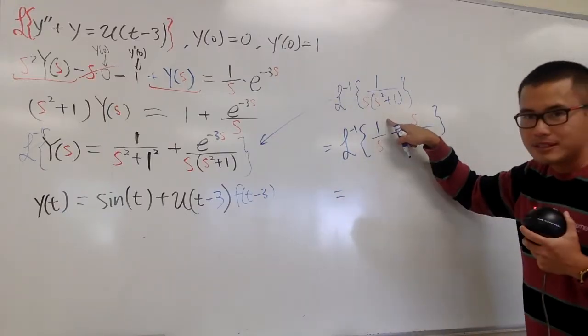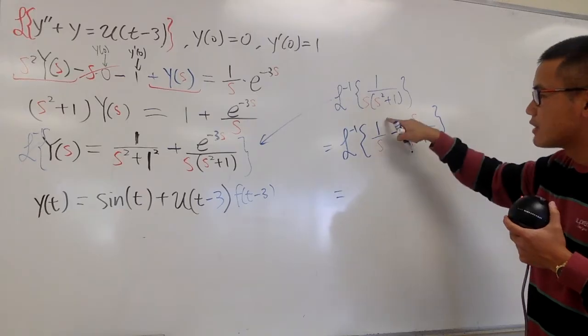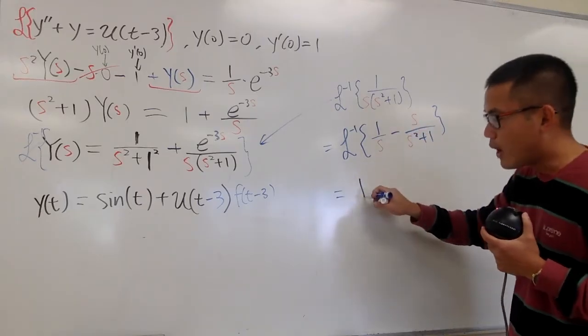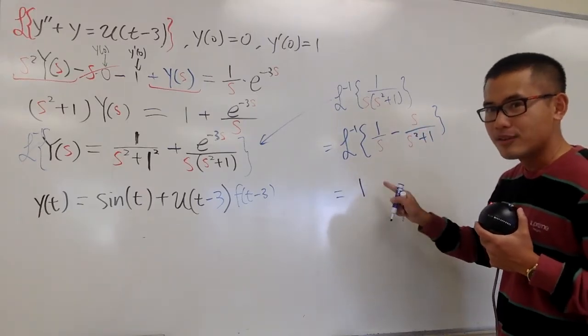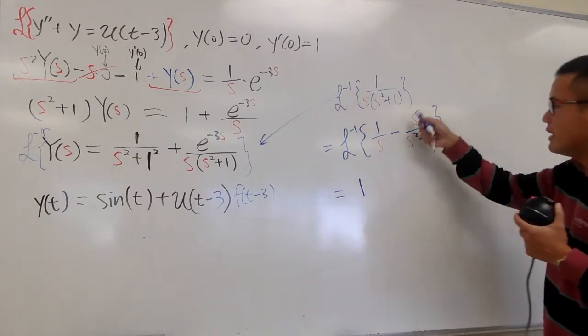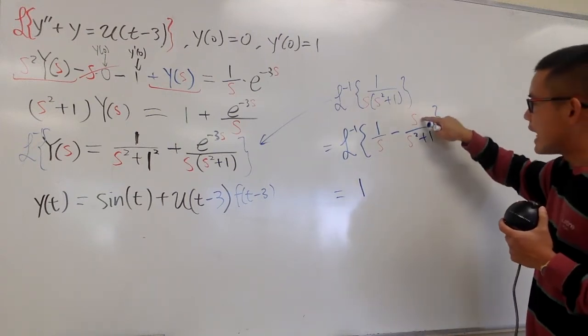And then, now, you see, the inverse Laplace of 1 over S is going to be 1, because the Laplace of 1 is 1 over S. For this, as you can see, we have S on the top, S squared on the bottom like this, and then plus 1. This is going to give us cosine, and then this is a minus.